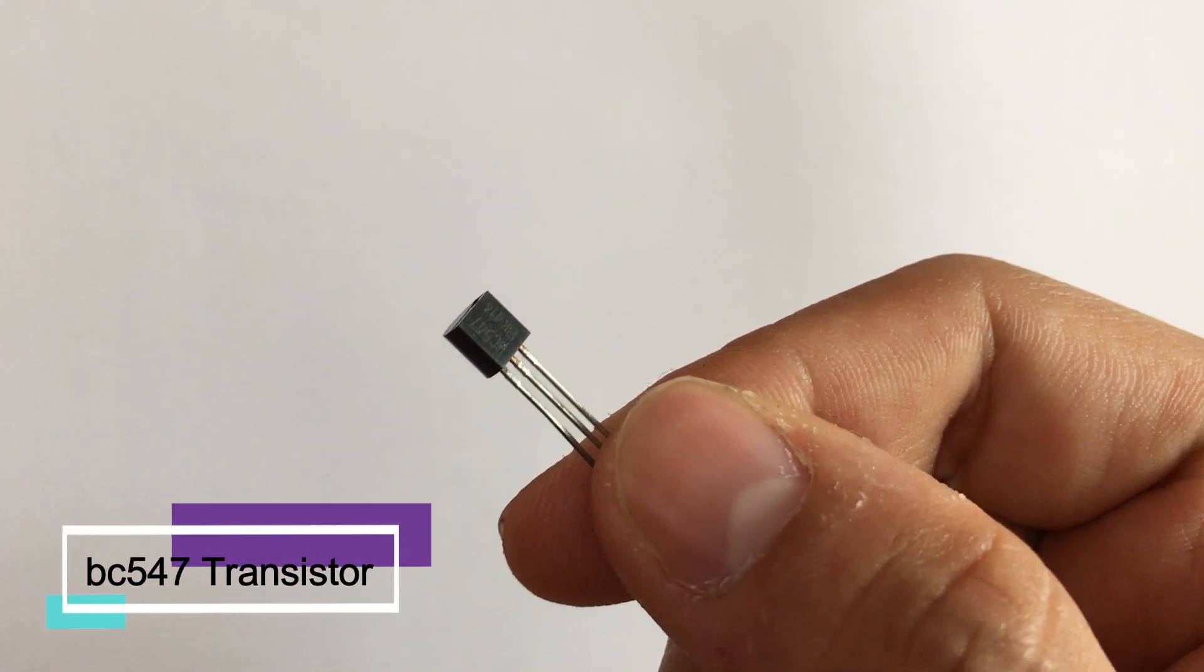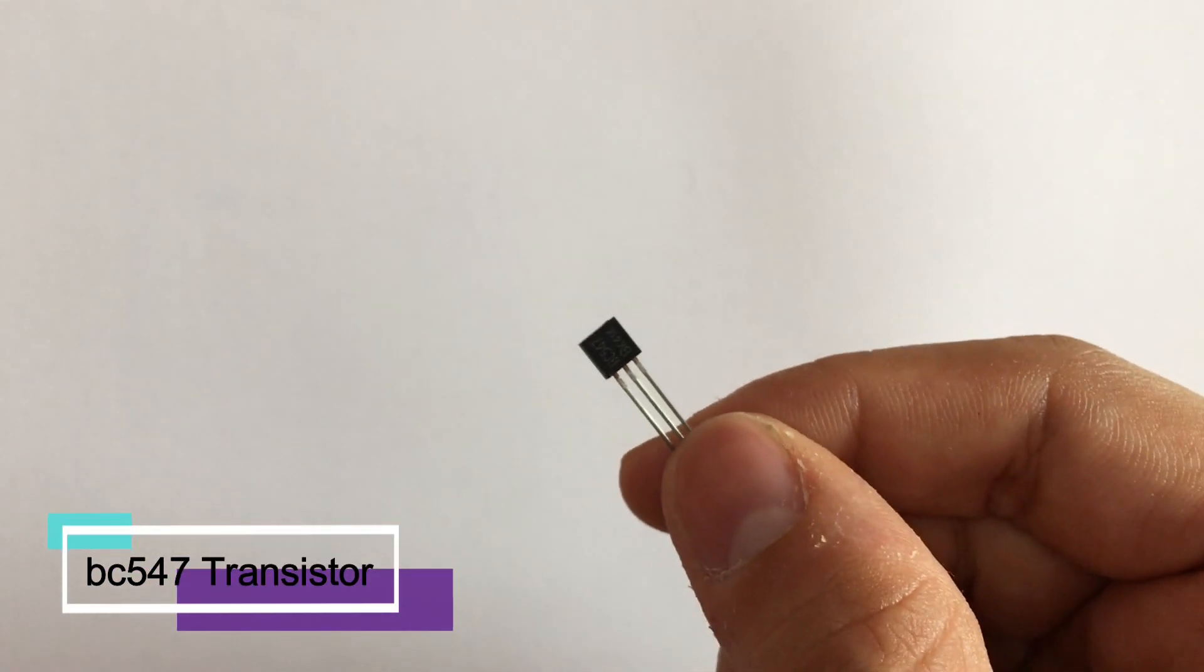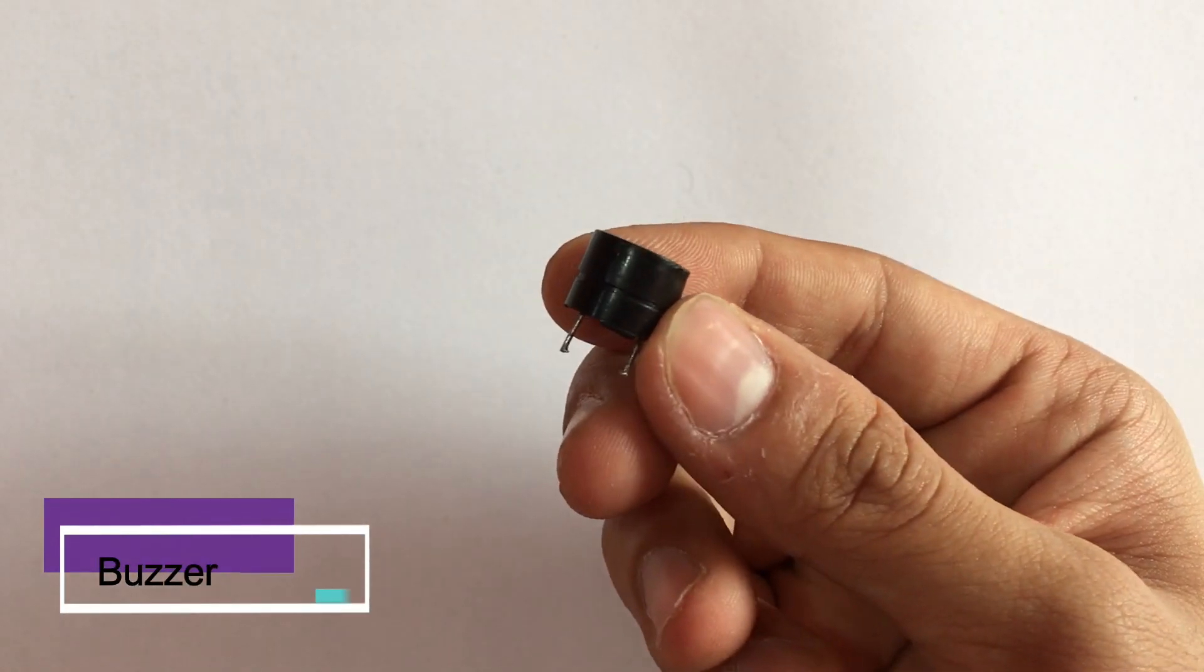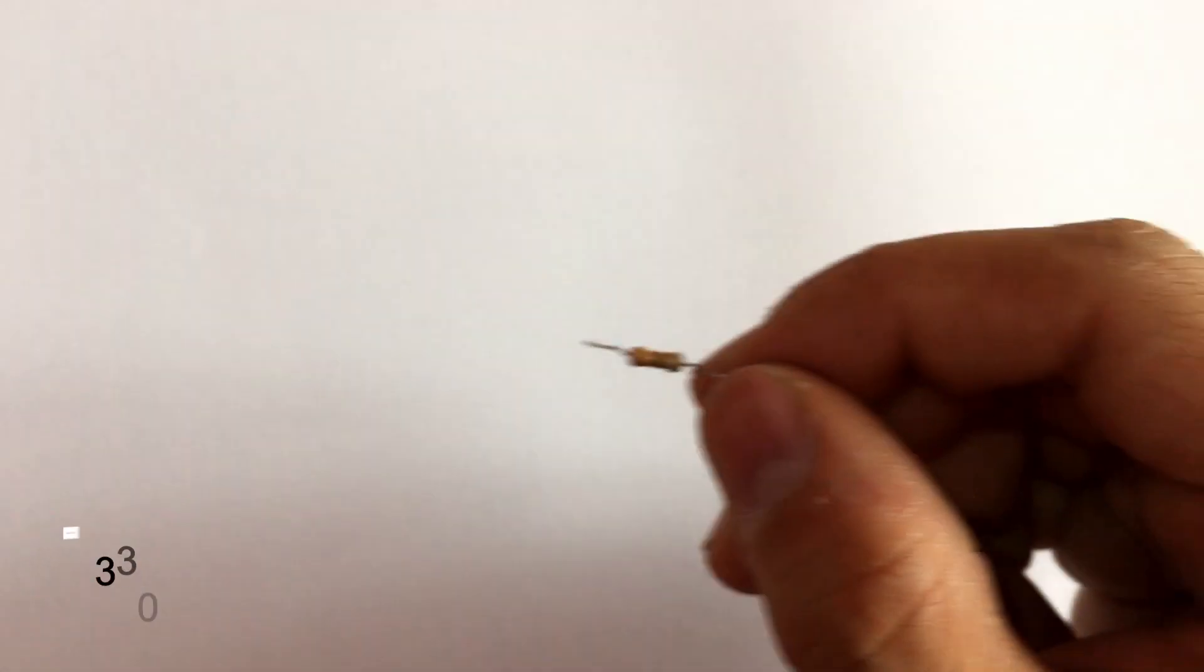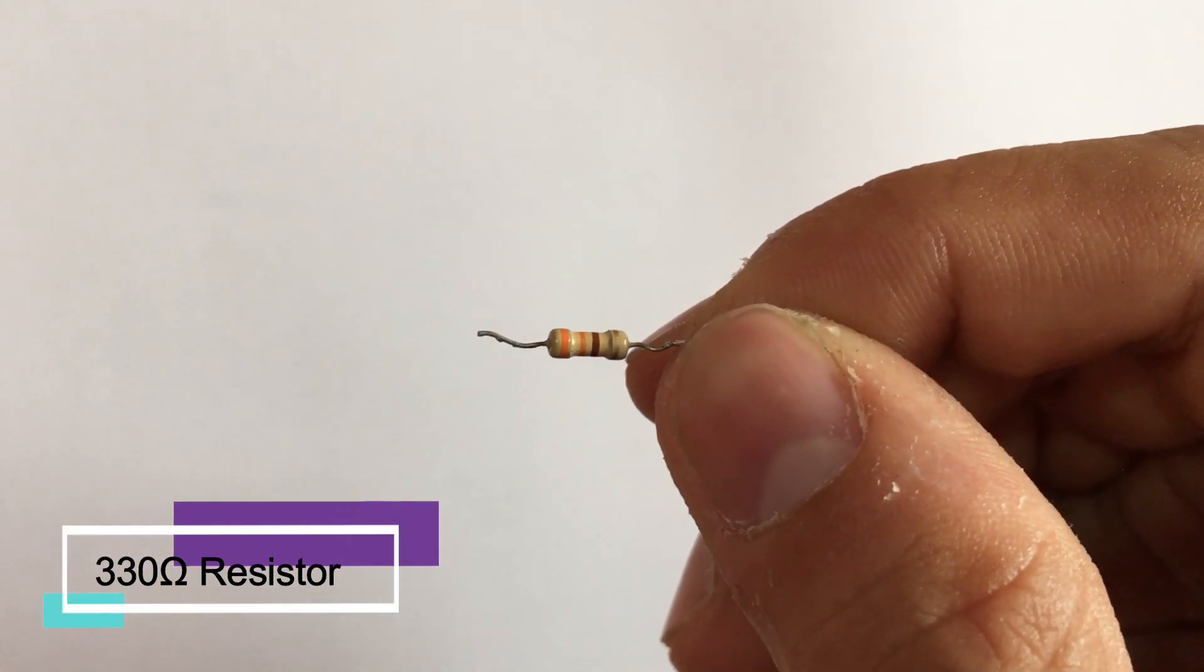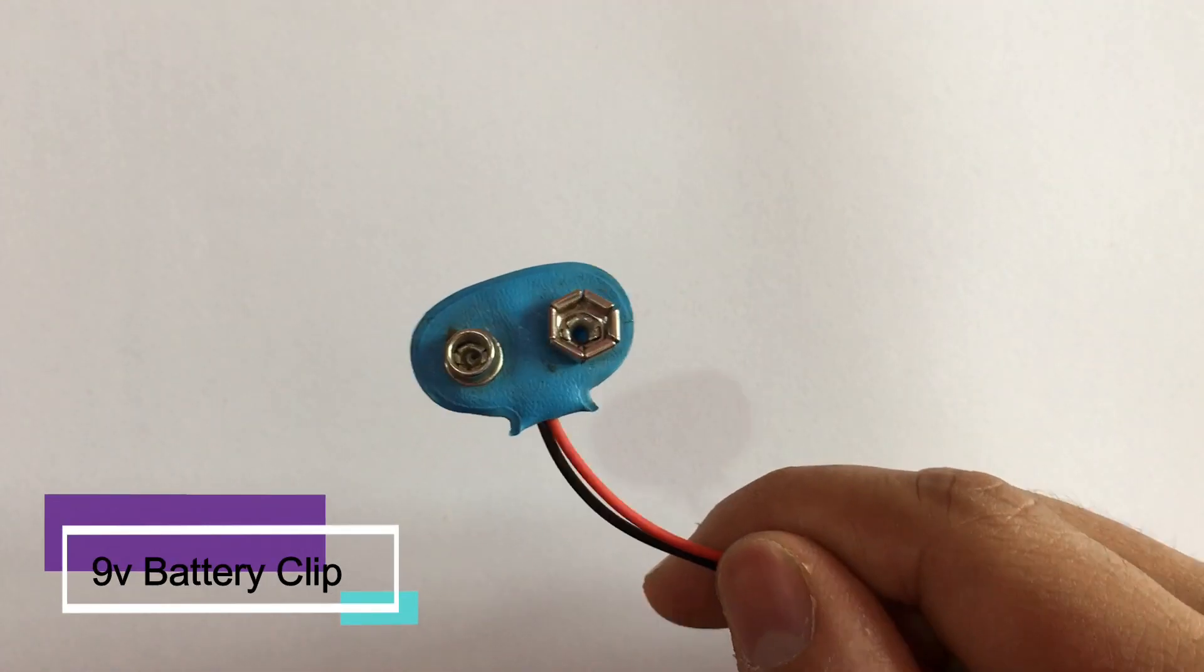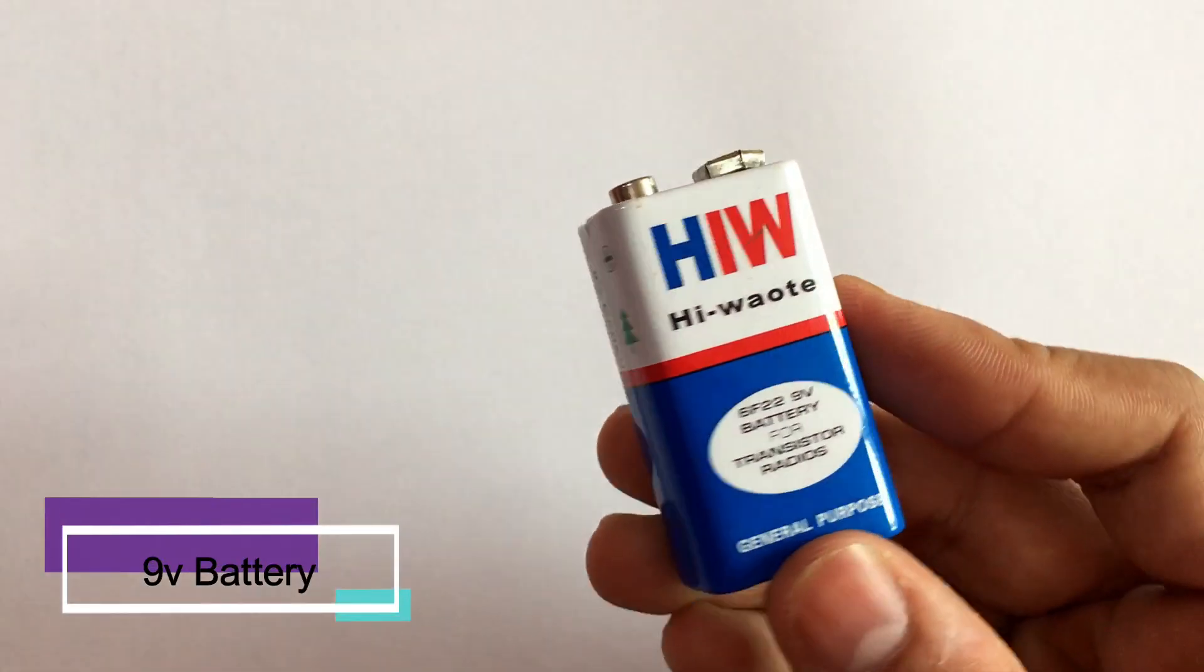To make this project you will need any NPN transistor. I am using BC547, a 9V buzzer, a 330 ohm resistor, a 9V battery clip, and finally a 9V battery.